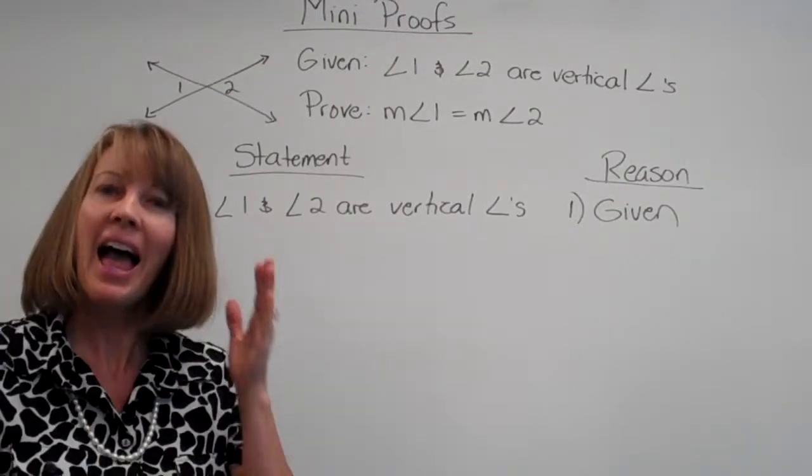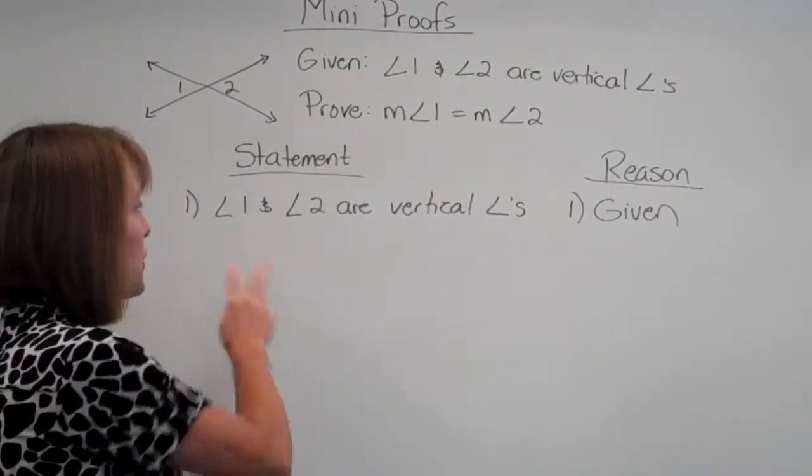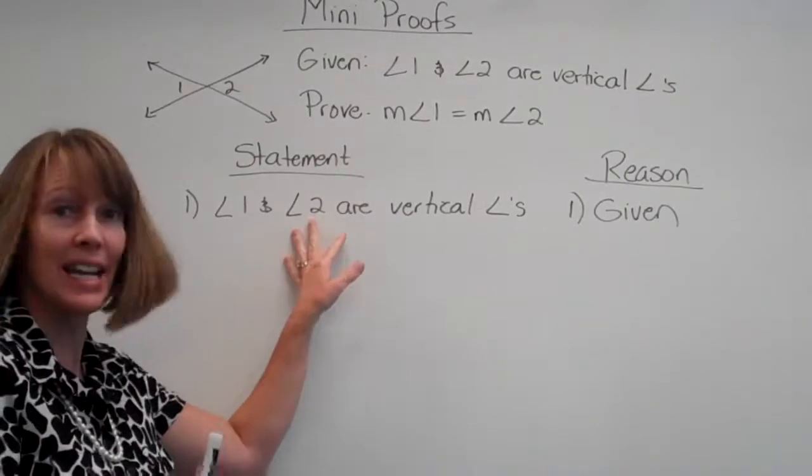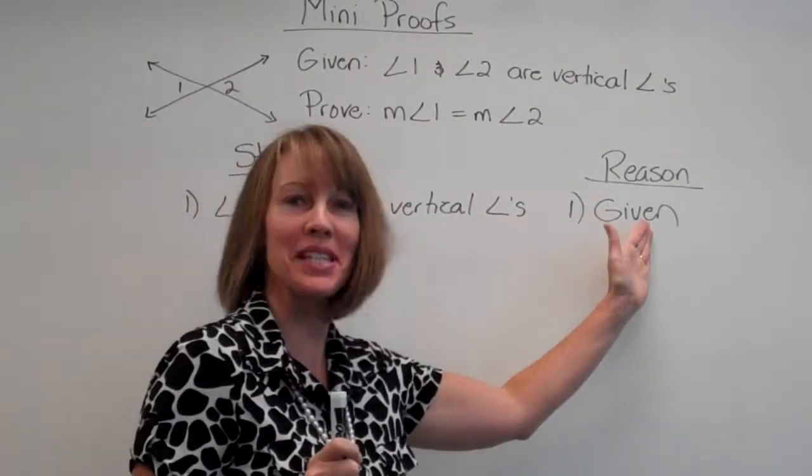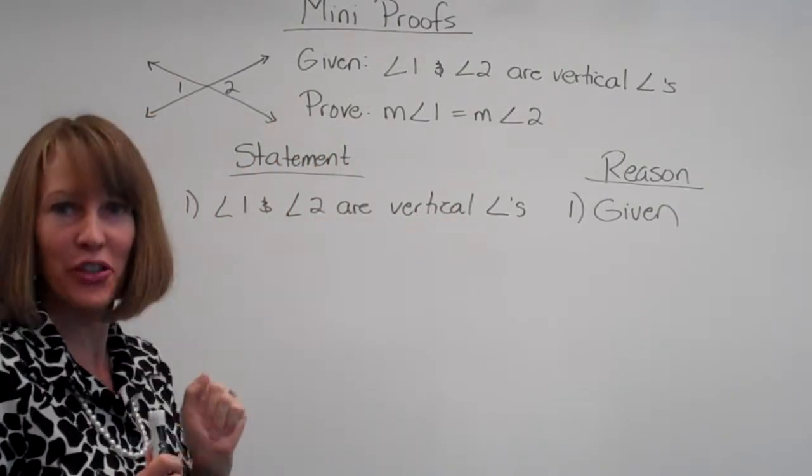Well, of course we know that, but how do we know that? So first we're given angle 1 and angle 2 are vertical angles. We write it down. Why? Because it was given. We love that. It's an easy first two points.